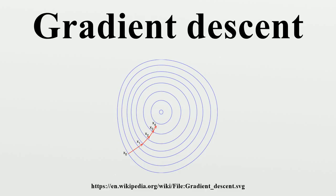Gradient descent can also be used to solve a system of nonlinear equations. Below is an example that shows how to use gradient descent to solve for three unknown variables, x1, x2, and x3. This example shows one iteration of the gradient descent.